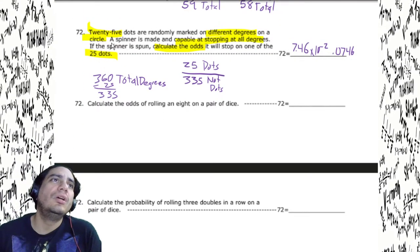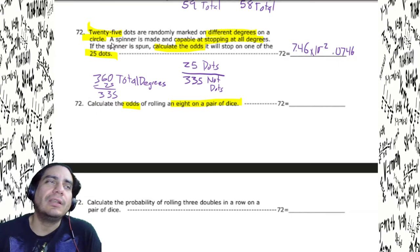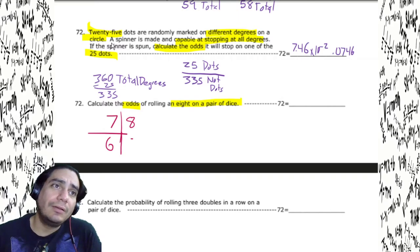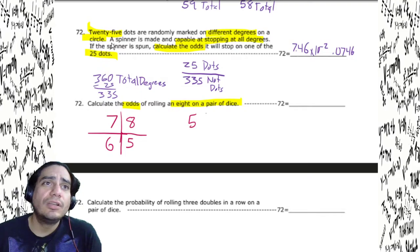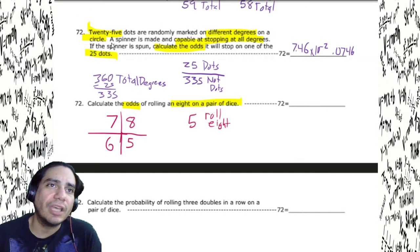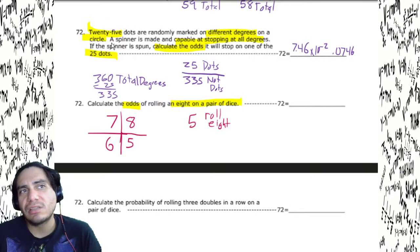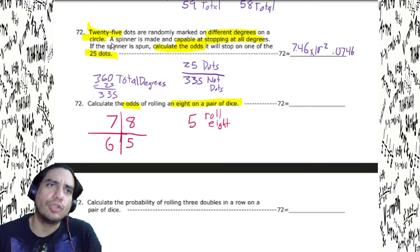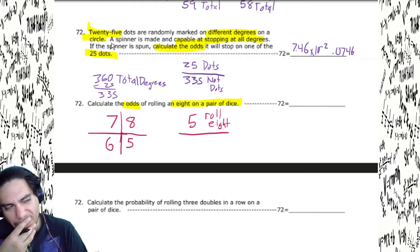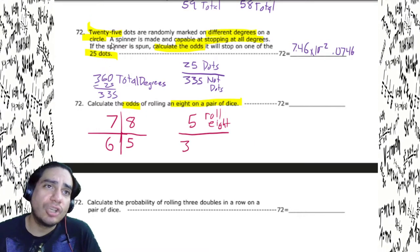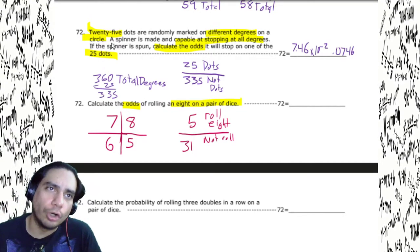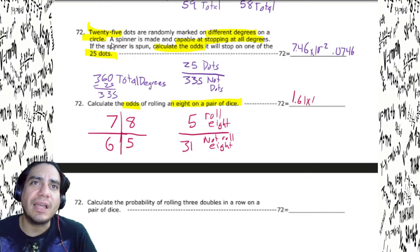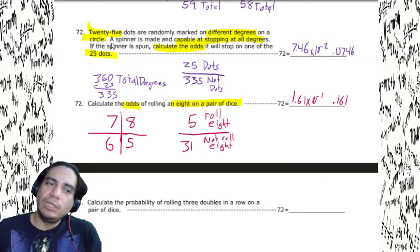Calculate the odds of rolling an eight on a pair of dice. To roll an eight: 2+6, 3+5, 4+4, 5+3, 6+2 — that's five ways. Since this is odds and there are 36 total, there are 31 that are not eight. Five divided by 31 gives 1.61 times 10 to the negative first, or 0.161.